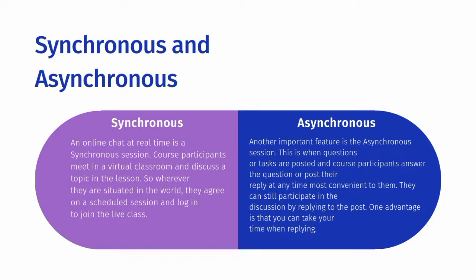Using Skype or platforms like Google Meet or Zoom to hold a live class is an example of synchronous learning — members of the class log in to their Skype account at a given time to join the video conferencing. In an asynchronous session, questions or tasks are posted and course participants answer or post their reply at any time most convenient to them. One advantage is that you can take your time when replying.